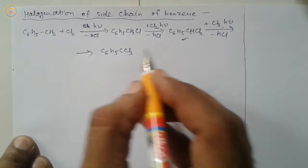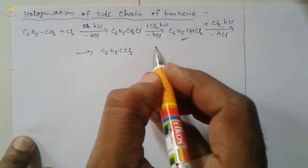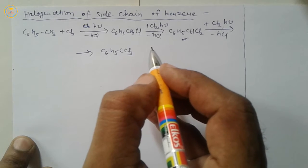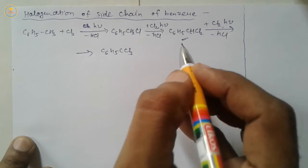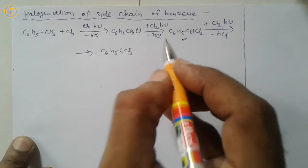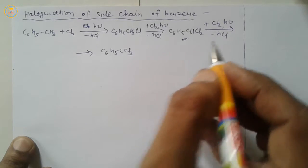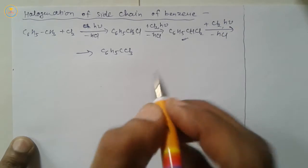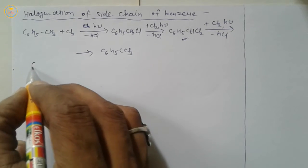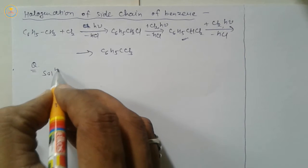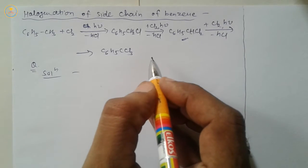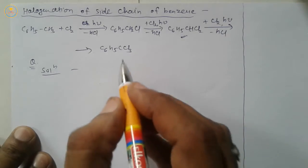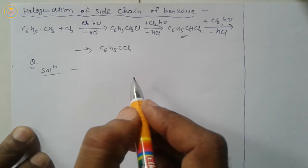Now we take a question for exercise. What product is obtained when toluene reacts with Cl2 in the presence of sunlight? Very important question. The solution is benzyl chloride.